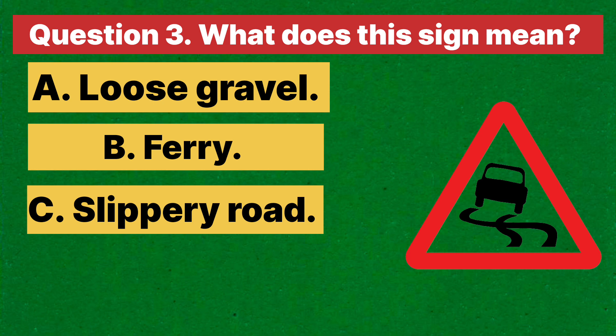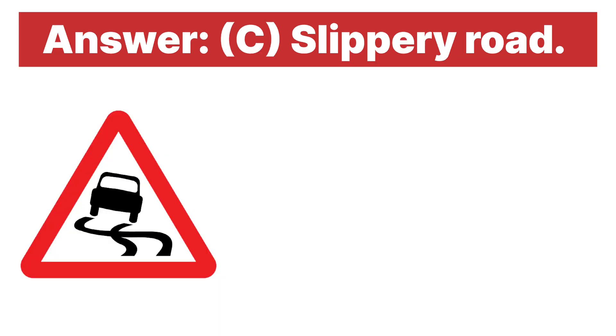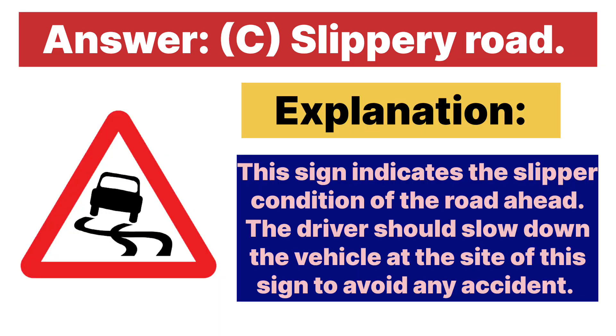Question three: What does this sign mean? A. Loose gravel. B. Ferry. C. Slippery road. D. Width limit. Answer is C, slippery road. Explanation: this sign indicates the slippery condition of the road ahead. Drivers should slow down the vehicle at the sight of this sign to avoid an accident.